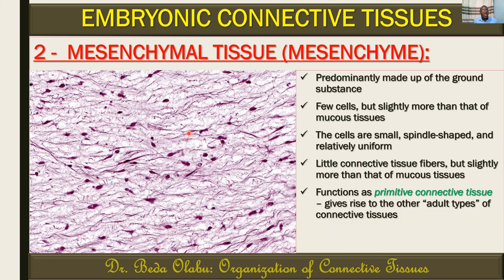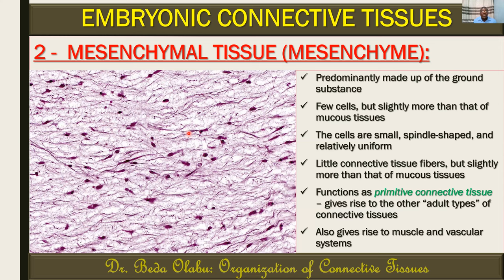The main function of mesenchymal tissue is that it functions as a primitive or primordial connective tissue — it is formed first before giving rise to the other adult-type connective tissues such as bone tissue, cartilage tissue, and adipose tissue. In addition to that, mesenchyme embryologically also gives rise to muscular tissue and some components of blood vessels. So mesenchyme gives rise to connective tissue, muscles, and vascular elements.